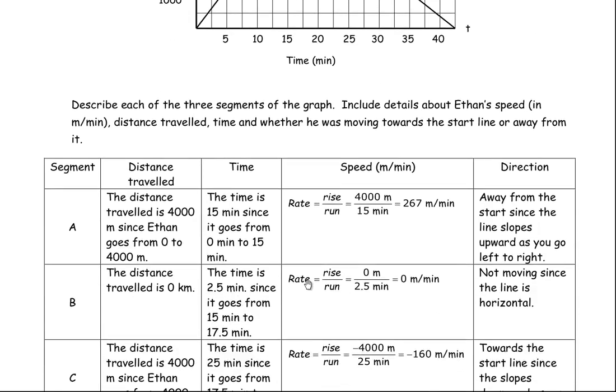To calculate the rate, the rise would be 0 meters, because he didn't travel anything. His distance traveled is 0, so 0 divided by 2.5 would be 0. 0 meters per minute means that he's not moving. So he's not moving, so he's neither going away from the start line nor back, because he's actually stopped. Maybe he stopped to take a drink of water before he left to come back. This is a run for charity. This isn't the Boston Marathon, so it's not a race for time necessarily.